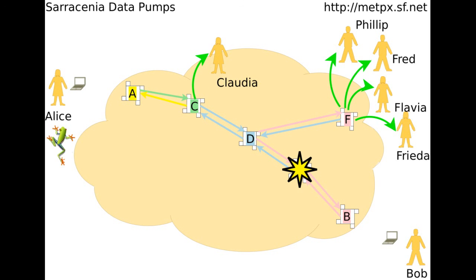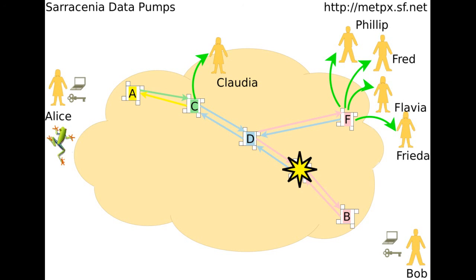If others are interested in the folder, they subscribe to it from their nearest pump. They will get the folder as it passes through their pumps on its way to B and F, so everyone gets it with only one pass through the long haul expensive network. Alice will get log messages for each subscriber and each file it is delivered to. Of course, if Alice only wants to share with Bob, the folder can be encrypted with a key that she only shares with Bob.